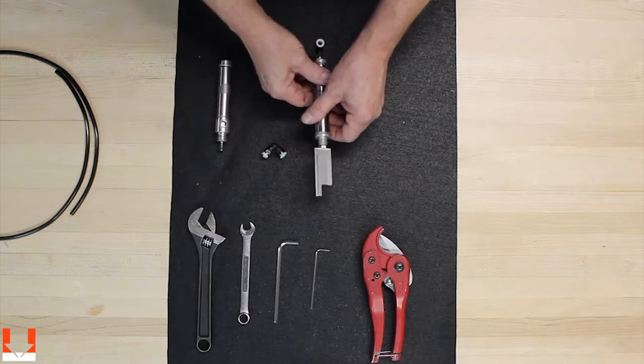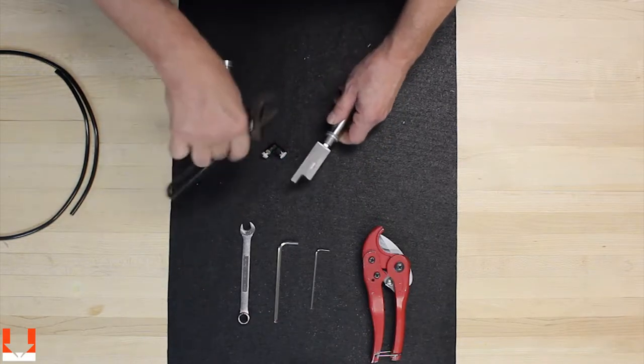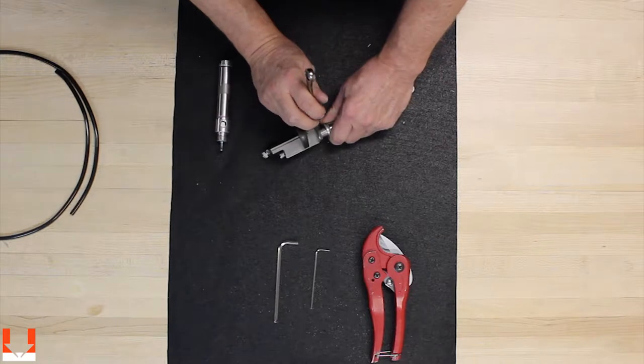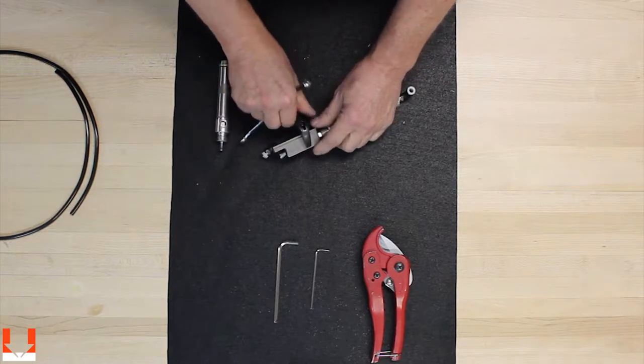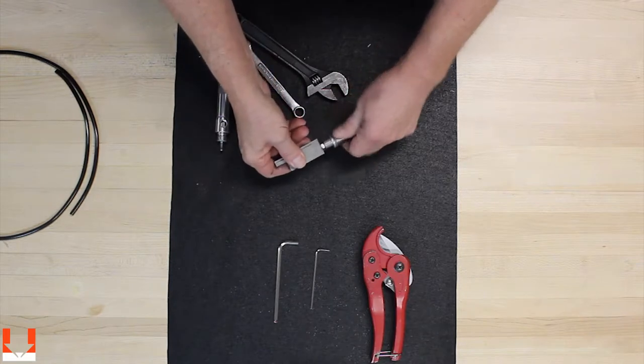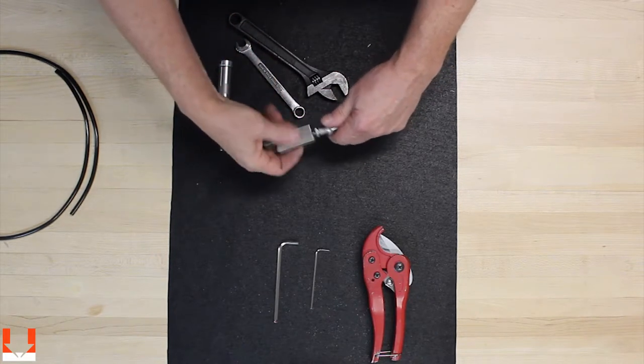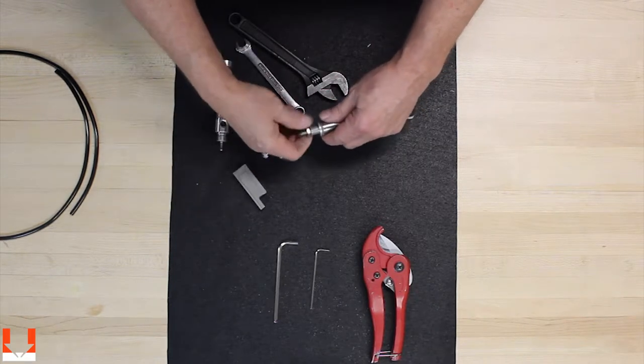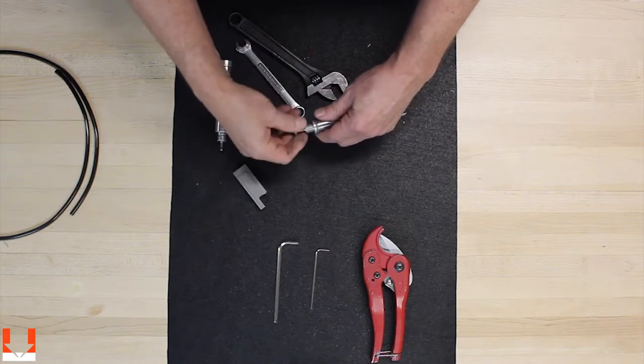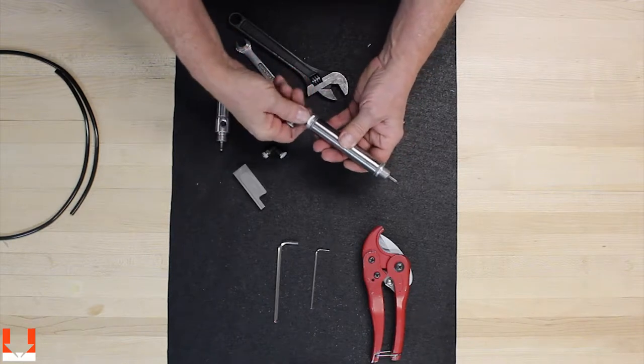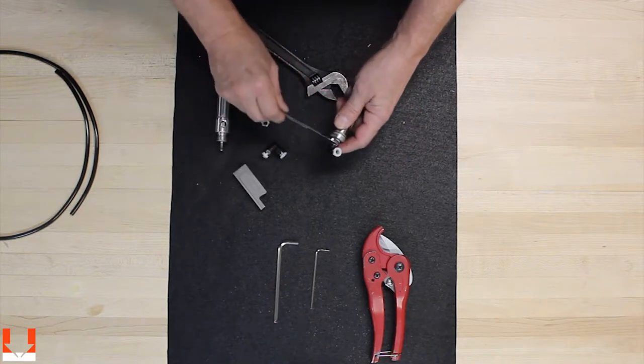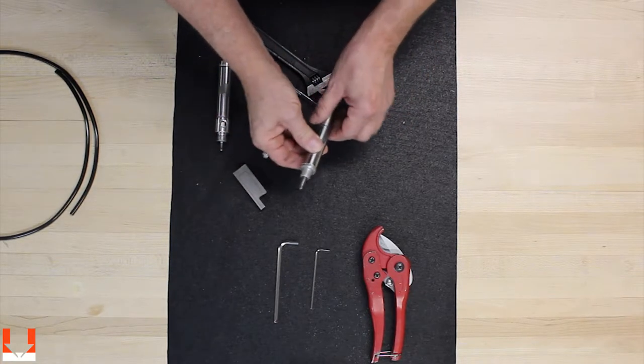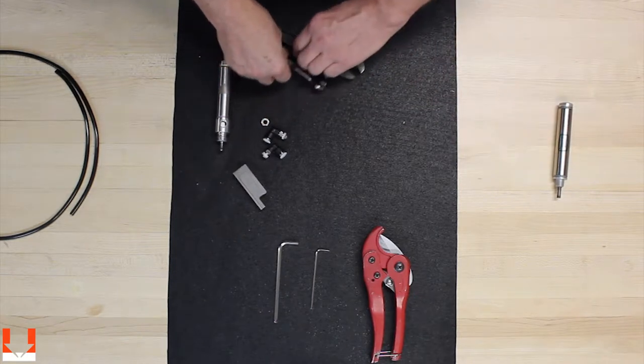So we're going to need to take these components off so we can put them on to your new cylinder. Loosen up on the jam nut. You can take this off and then the air fitting on the back that will be tightened, you can take that off. Now that's your old load cylinder. We'll put that off to the side because we don't need that anymore.